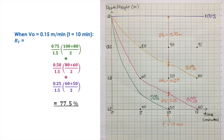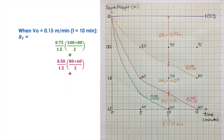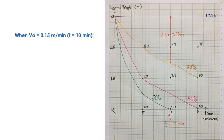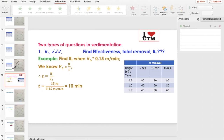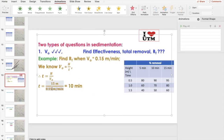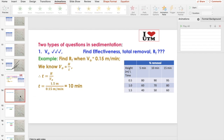A student points out: there was a typo — H was written as 15 instead of 1.5 meters. Thank you for catching that. I'm impressed — bagus lah, teaching you guys. Always point out any mistake that I make; it means that you guys are focusing.